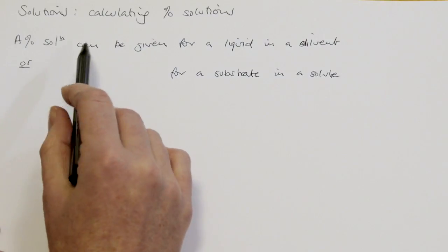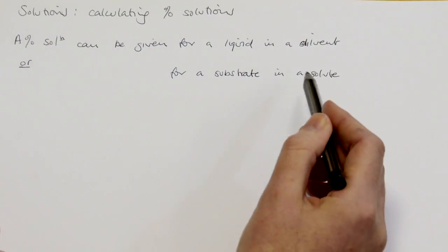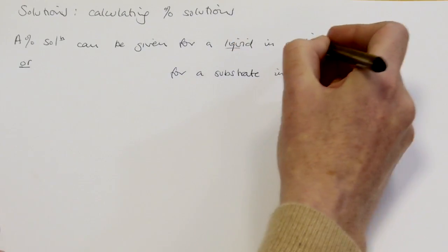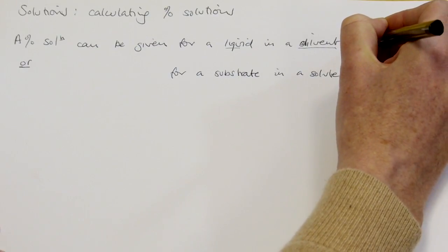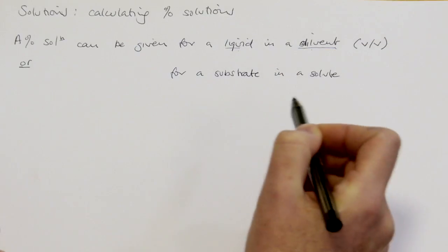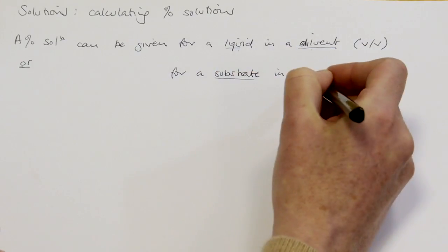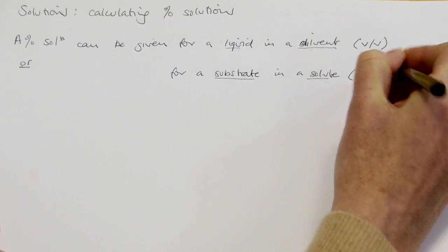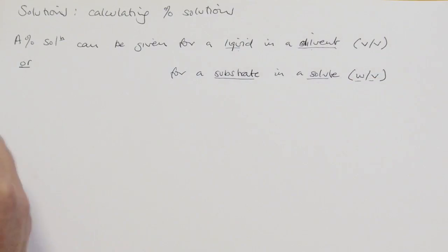A percentage solution can be given for a liquid in a diluent, or for a substrate that has been put into a solute. If we are putting a liquid into another liquid, the percentage is expressed as volume per volume — two volumes because they're both liquid. If it's a percentage solution of a substrate in a solute, it is expressed as weight per volume, because we've measured a dry weight and put it into a liquid.